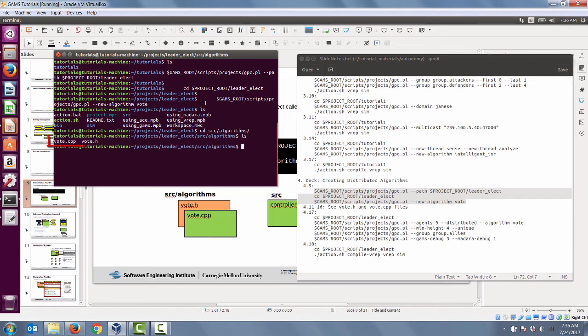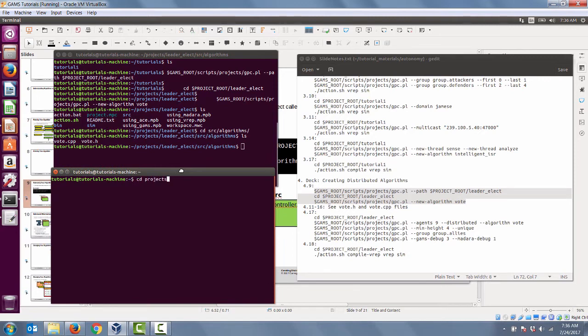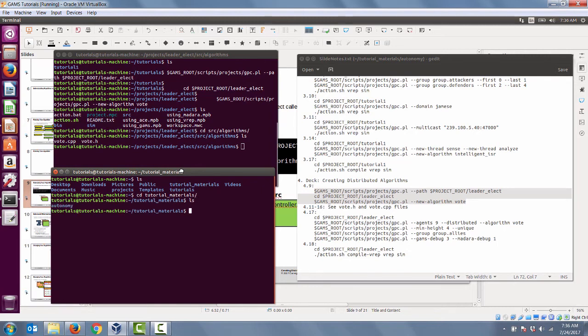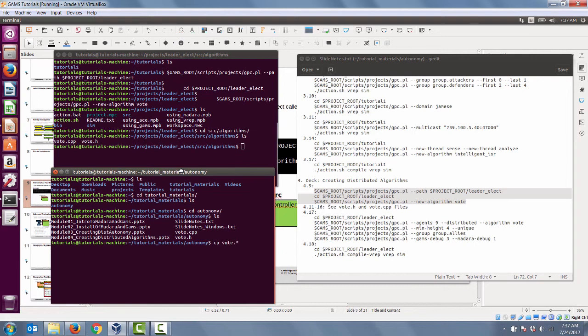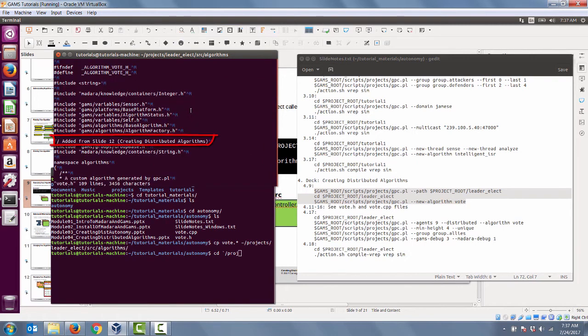As you can see, we can see a vote.cpp and a vote.header file that are created by this GPC.pl script we ran earlier. Now we go into the tutorial materials provided with this course and copy the vote.header file and the vote.cpp file, so we can use those and copy those into the source algorithms directory inside of the new project we created. We're going to copy vote.star and source it into the project's leader elect source algorithms directory that we created through the GPC.pl command. You can check your file by looking inside and looking for comments like 'added from slide 12 creating distributed algorithms' to tell that this is actually the vote.h that is included in the tutorial materials.